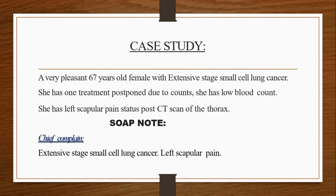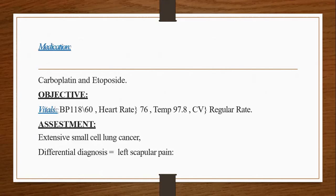SOAP note — Subjective, Objective, Assessment, and Plan. Subjective: she is a 67-year-old female. She comes with a chief complaint of extensive stage small cell lung carcinoma and left scapular pain. Medication: currently she is taking carboplatin and etoposide for her small cell lung cancer.